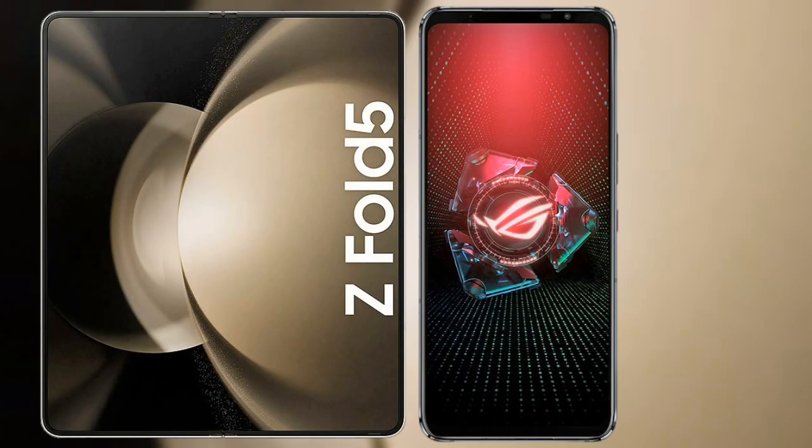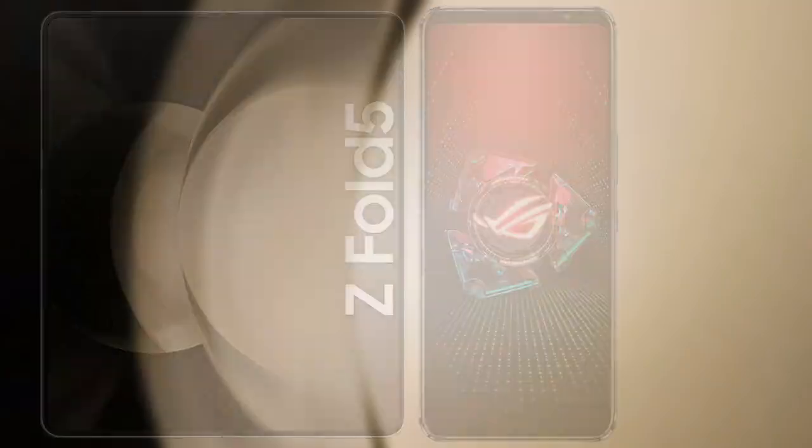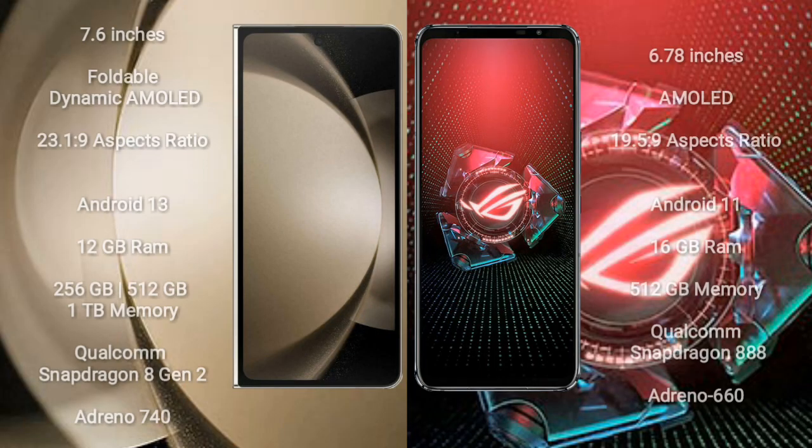I will compare the new Samsung Galaxy Z Fold 5 with Asus ROG Phone 5 Pro. Samsung Galaxy Z Fold 5 comes with a 7.6-inch foldable dynamic AMOLED display and an aspect ratio of 23.1:9. Asus ROG Phone 5 Pro has a 6.78-inch AMOLED display and an aspect ratio of 19.5:9.